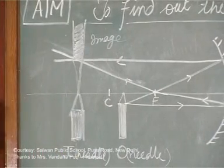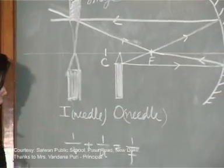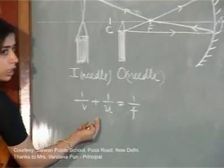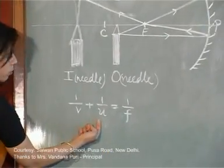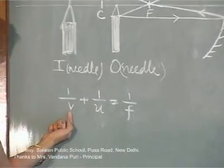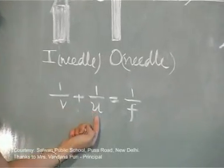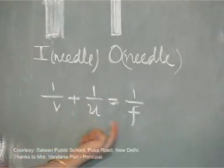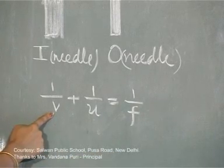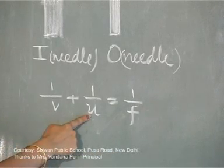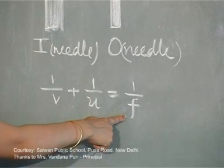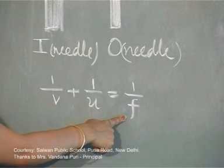Now in order to find out the focal length, the formula which I will be using is the basic mirror formula: 1/V plus 1/U is equal to 1/F. V is the image distance, U is the object distance, and F is the focal length of the mirror that you are using.